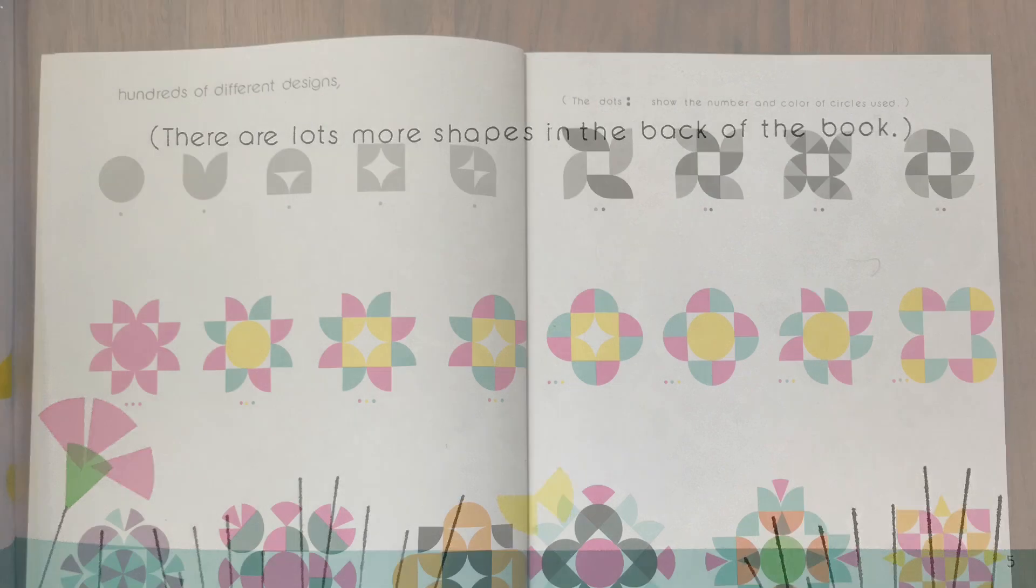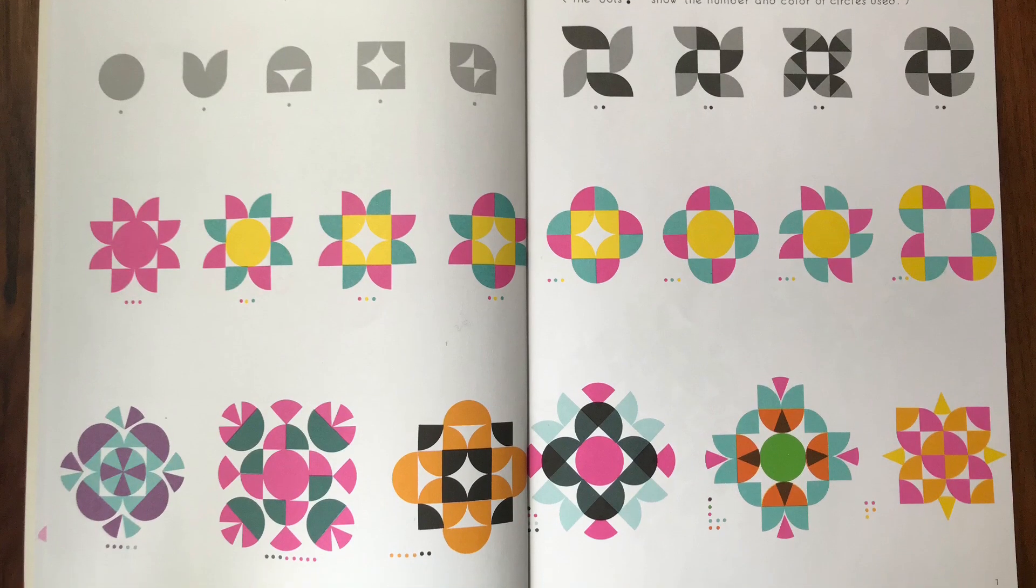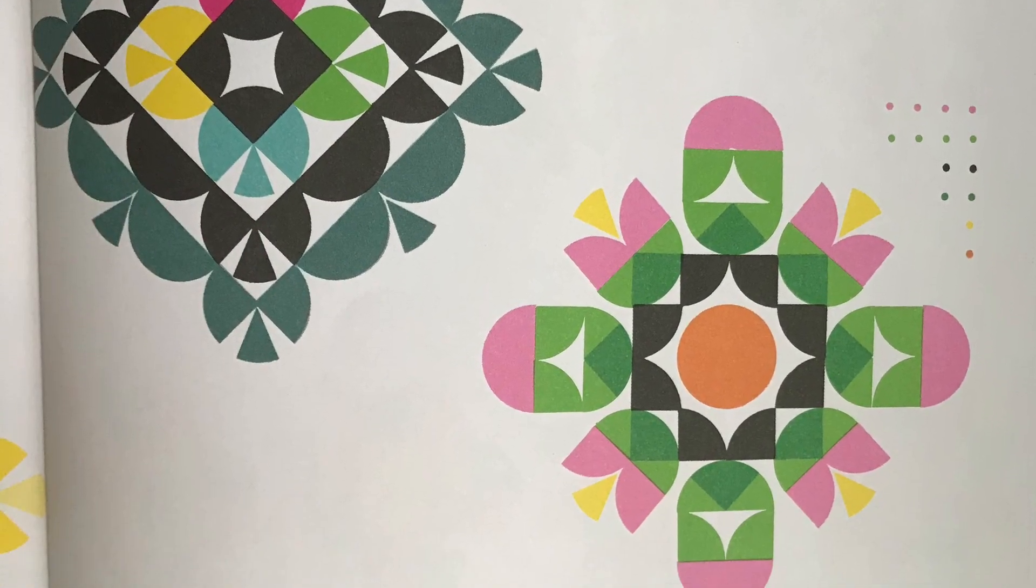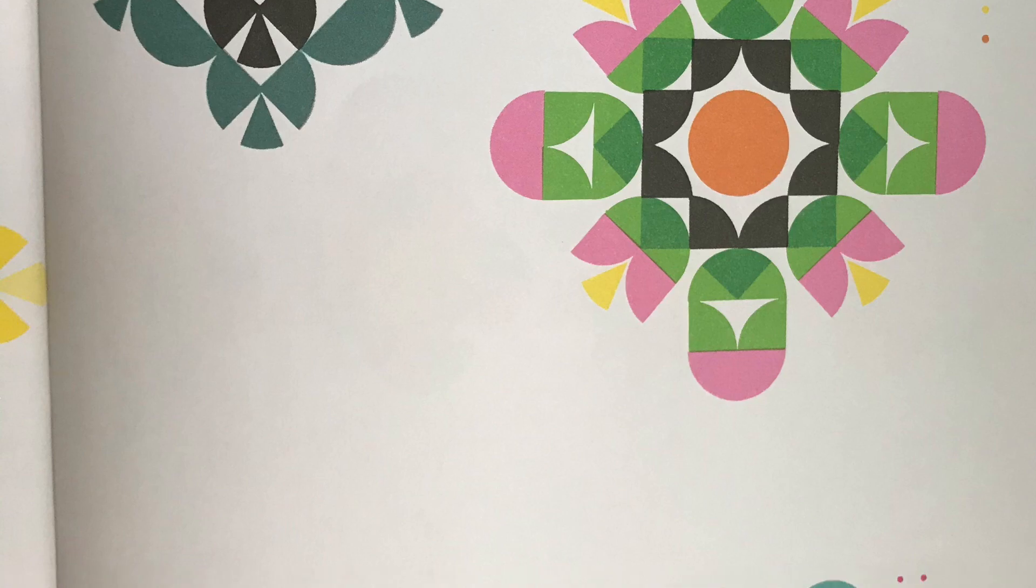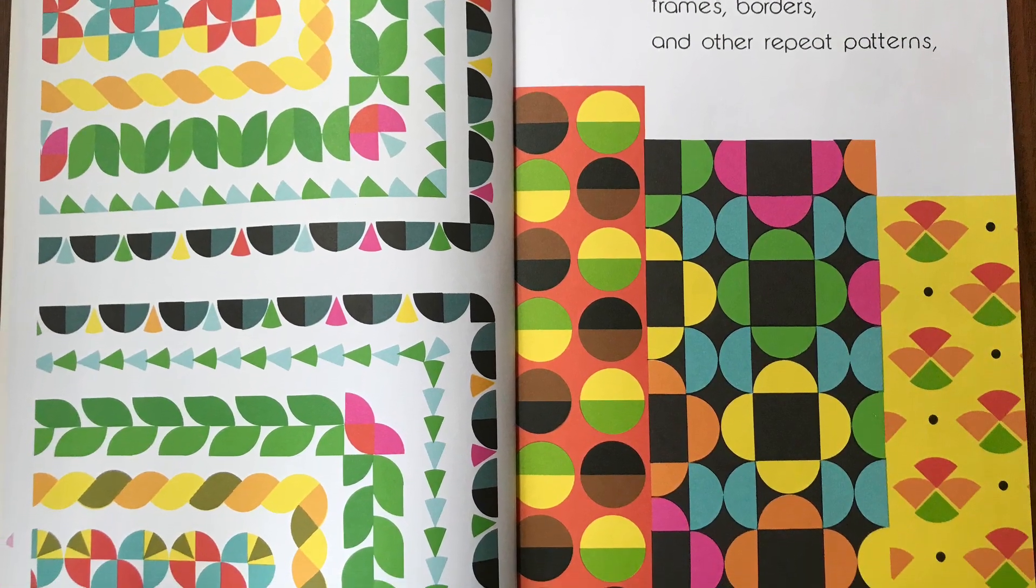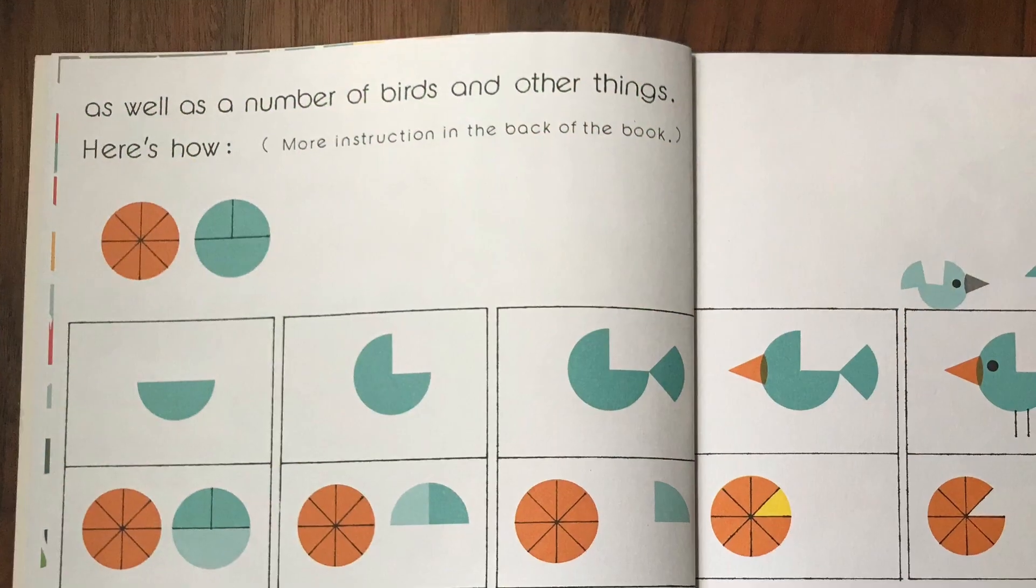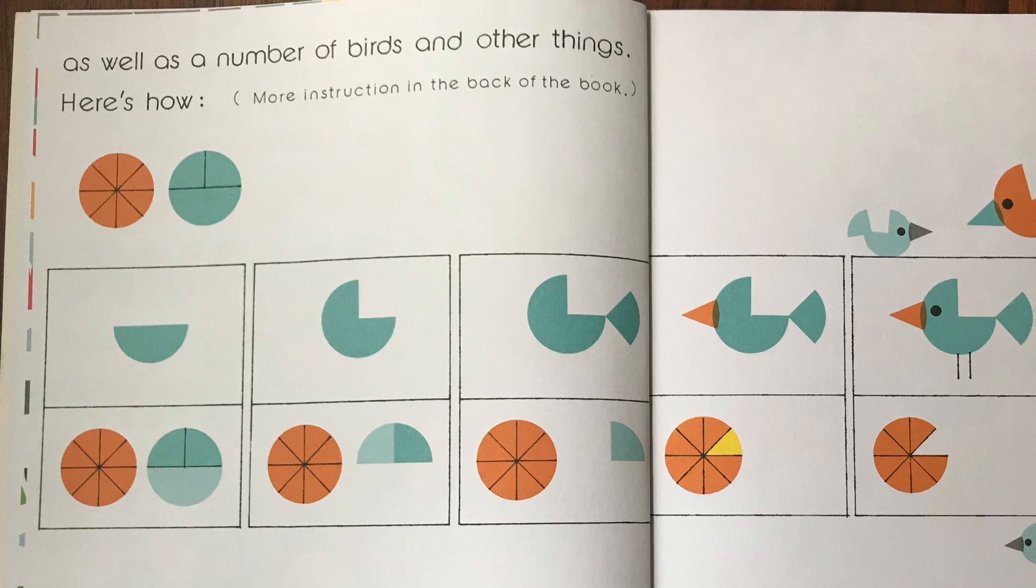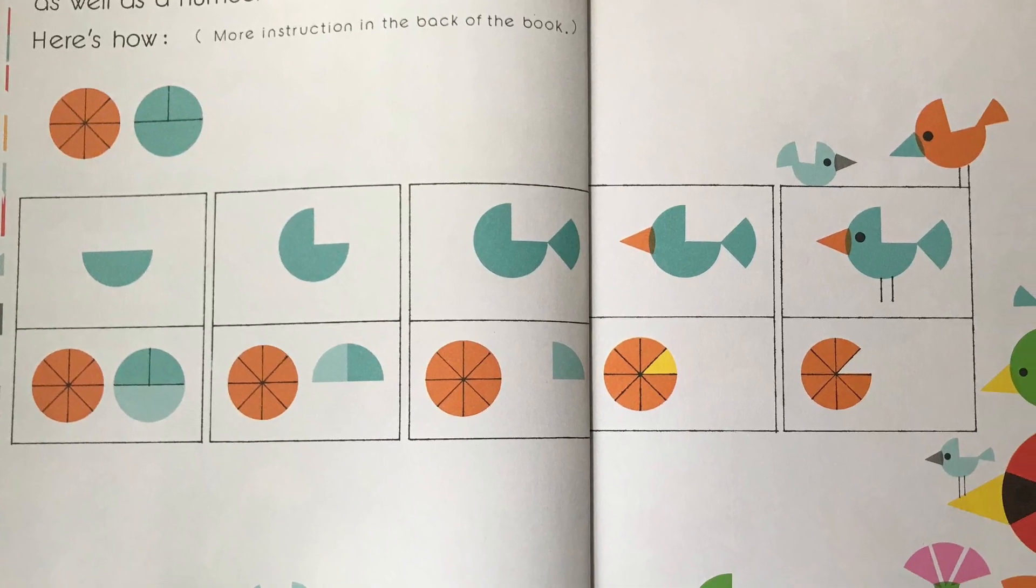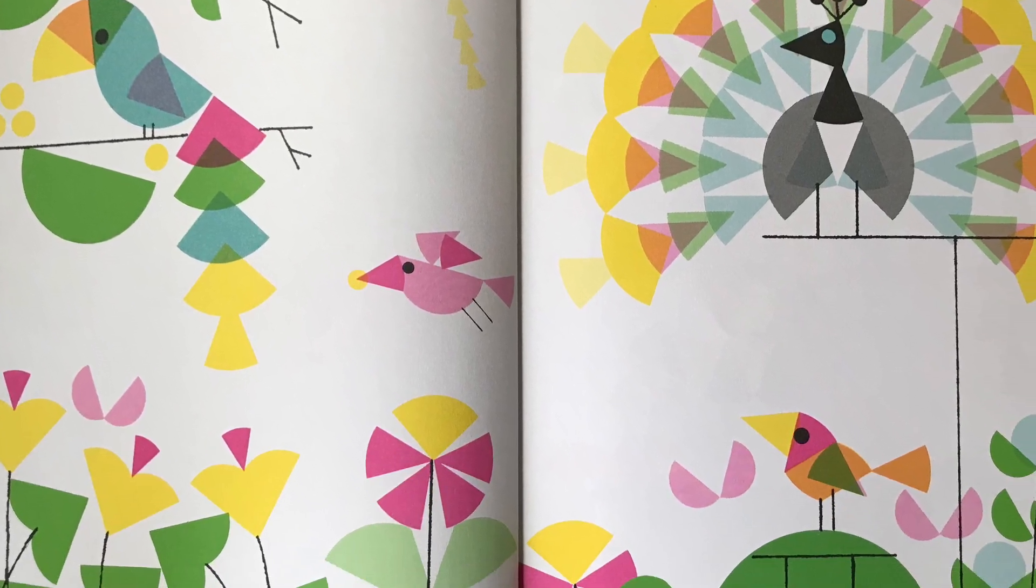Hundreds of different designs. The dots below the pictures here show the number and color of circles used, frames, borders and other repeat patterns as well as a number of birds and other things. Here's how and there's more instruction in the back of the book. You can always pause this video where you like to take a longer look.